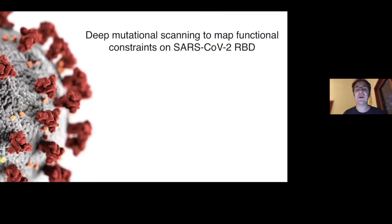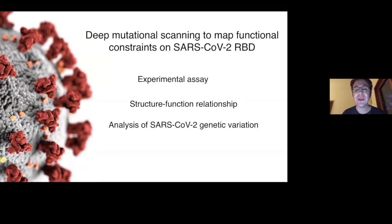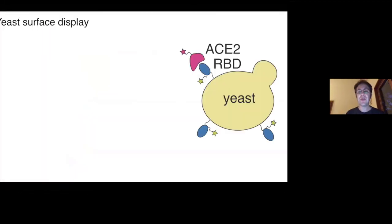I'm first going to talk about deep mutational scanning as a technique to map the functional constraints—how mutations to this receptor binding domain influence its ability to bind receptor. I'm going to do that in three parts: first describing the experimental assay, then what it tells us about structure-function relationships in the RBD, and finally how we can use the data to analyze SARS-CoV-2 genetic variation circulating in the human population.